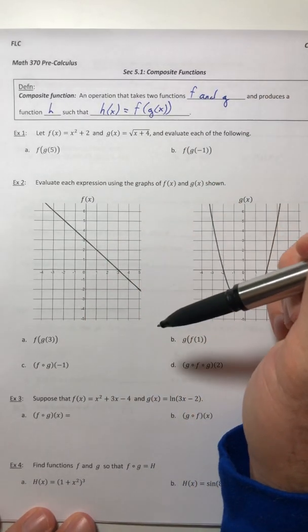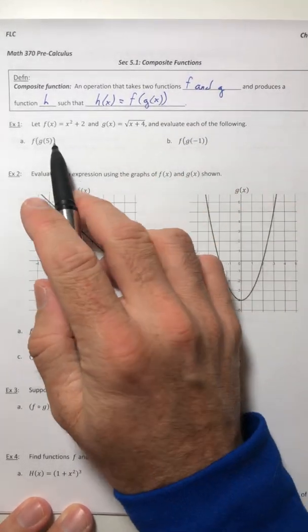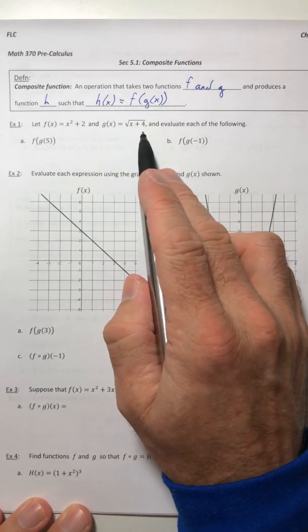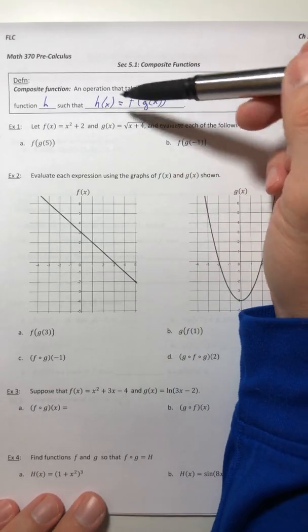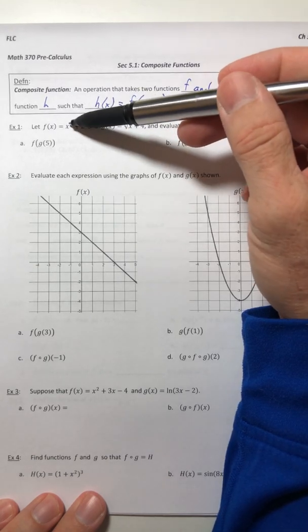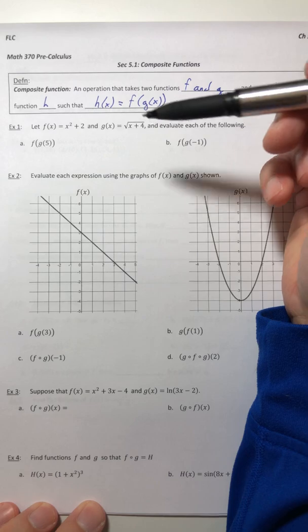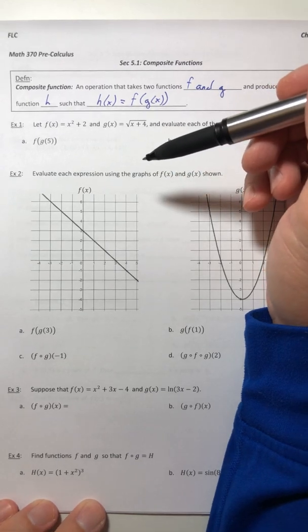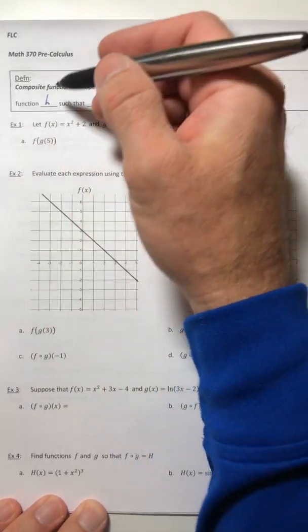We're going to be interested in actually calculating values of a composite function, and there are a couple of ways to do this. Let's start with example one: f(x) = x² + 2, g(x) = √(x + 4), and we're going to evaluate each of the following. One way you could do this is just follow the definition straight out. But sometimes it's pretty lengthy, so instead we're just going to start plugging in numbers. You're going to work your way from the inside out.